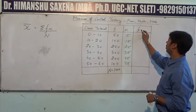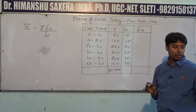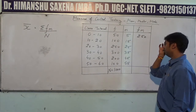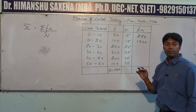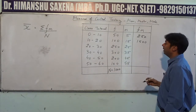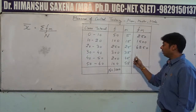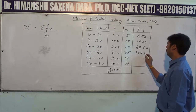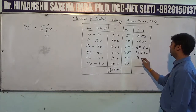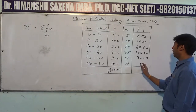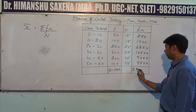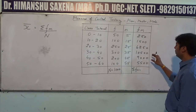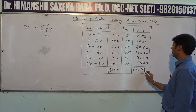Now we construct the fm column, which is the product of frequency and midpoint. So: 50×5=250; 100×15=1500; 250×25=6250; 300×35=10500; 200×45=9000; and 100×55=5500. Summation fm is the total of all these values, which equals 33000.